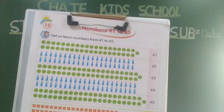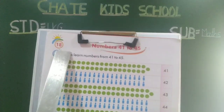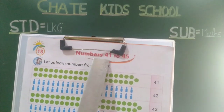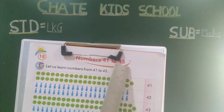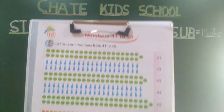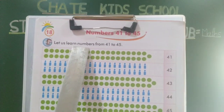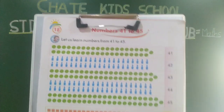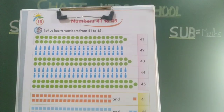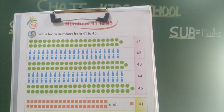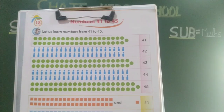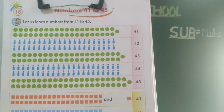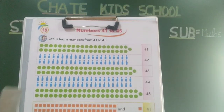Next, we learn lesson number 18 — number 41 to 45, okay. Let us learn numbers from 41 to 45. Apaan, in previous video, apaan 40 parantat learn kare liya ahe. Ata apaan 41 to 45 learn kare cha hai, okay?